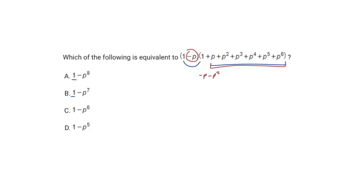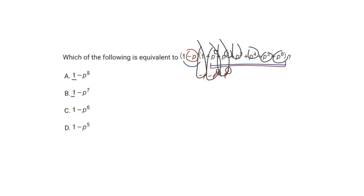When I multiply negative p times positive p squared, that gives me negative p to the third. So comparing the powers: here is power of 1, this is power of 2, and now it's power of 3 — it's always going to be 1 above. So if I just count the number of variables: 1, 2, 3, 4, 5, 6, and 7. Therefore my final answer is B.